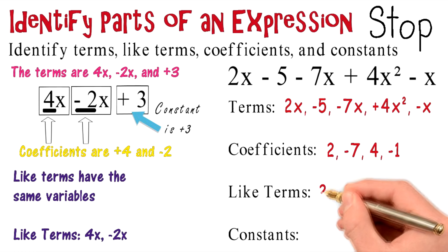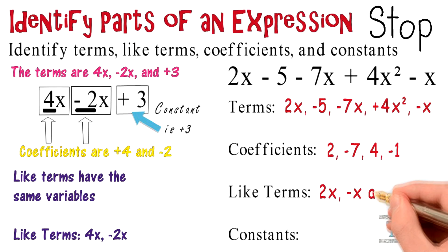The like terms are 2x, negative x, and negative 7x. And your constant is all by itself, negative 5.